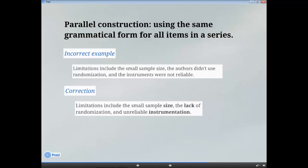Incorrect example: Limitations include the small sample size, the authors didn't use randomization, and the instruments were not reliable. In this example, the first item in the list, small sample size, is a phrase, while the other two items are entire clauses, noun plus verb.